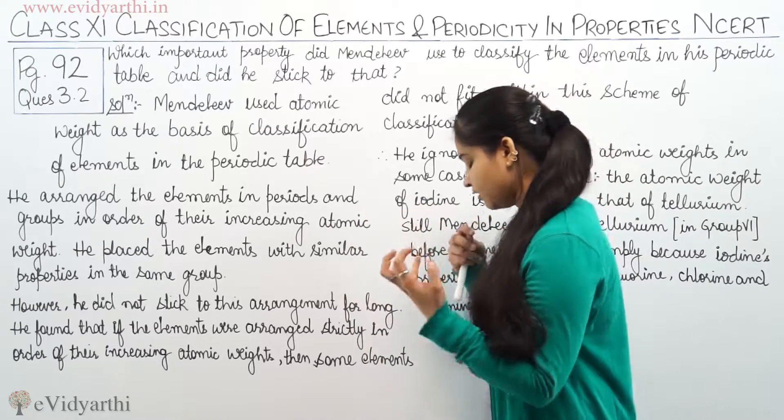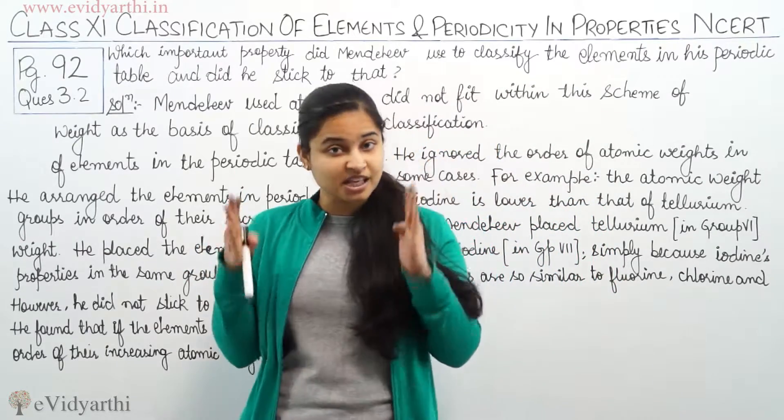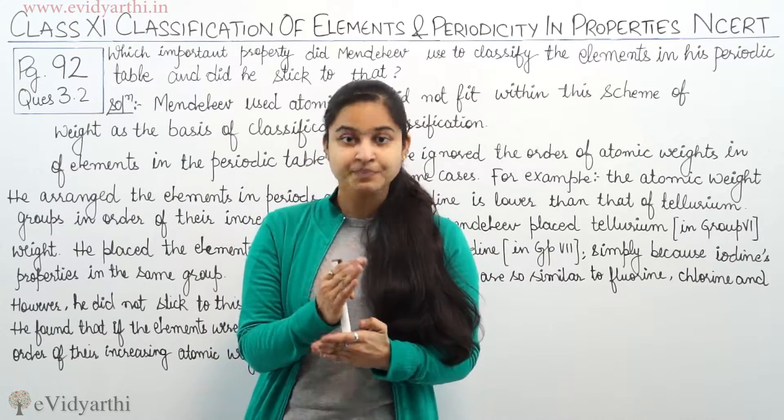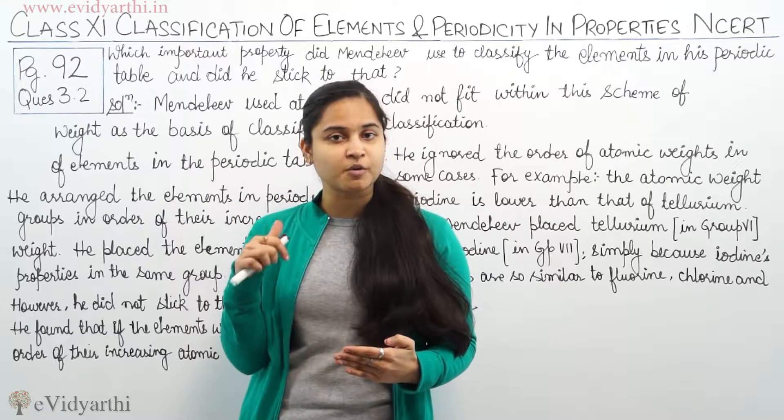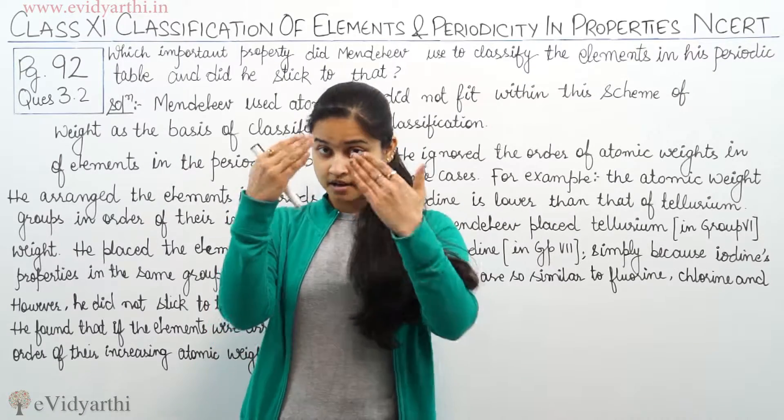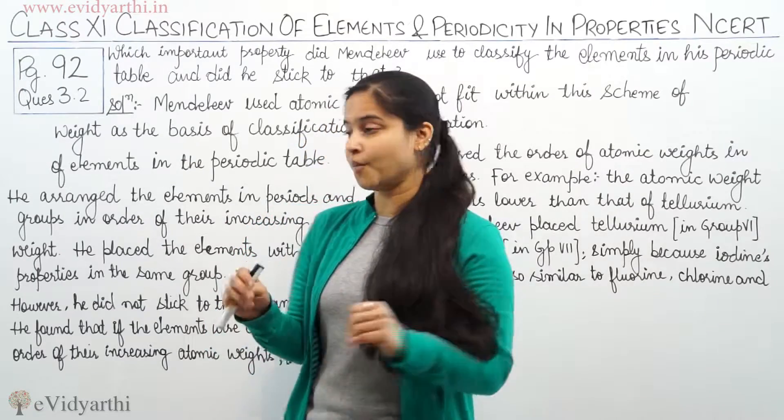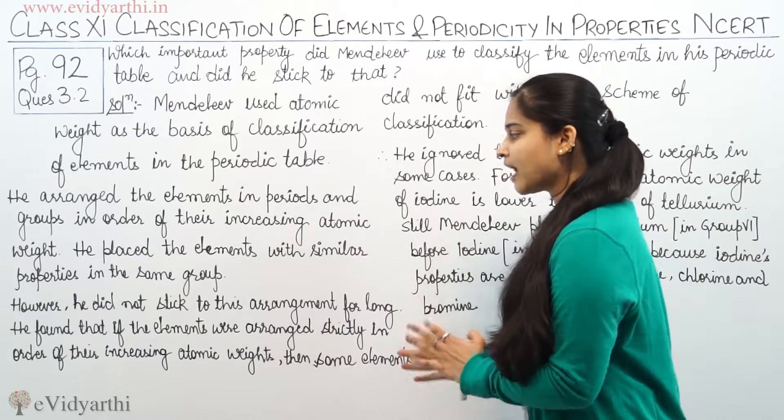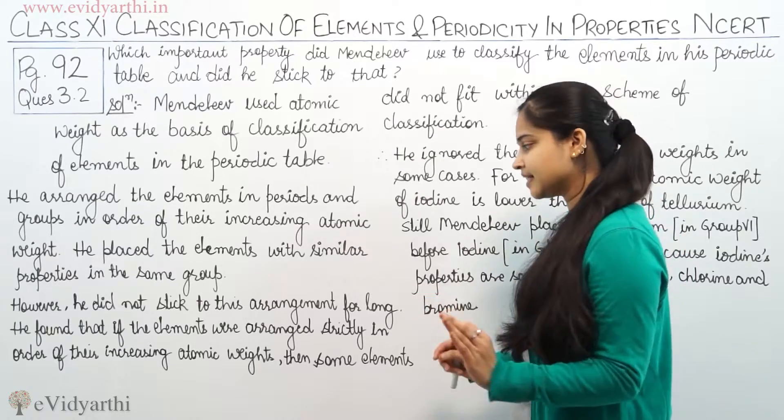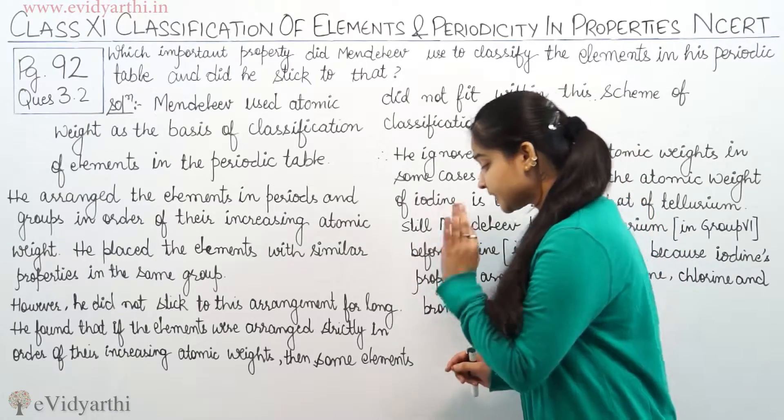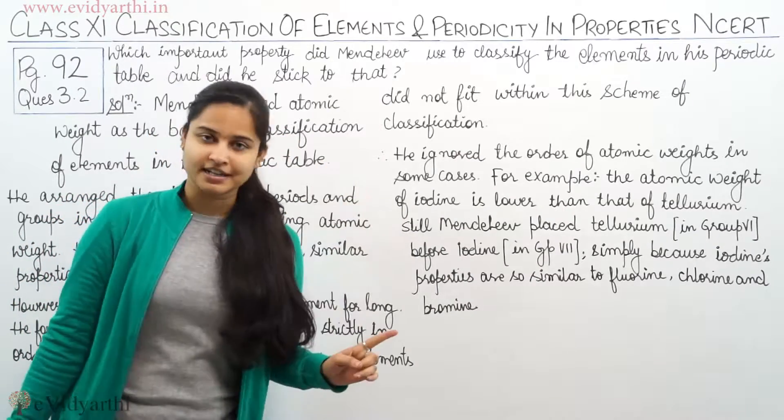there are some elements which do not fit into this scheme of classification. So he found that if the elements were arranged strictly in order of their increasing atomic weight, then some elements did not fit within the scheme of classification.